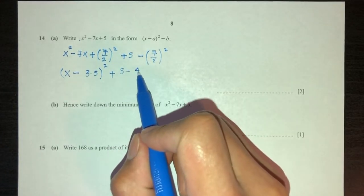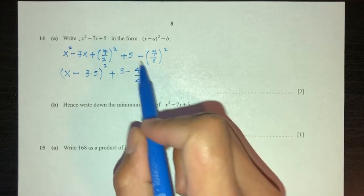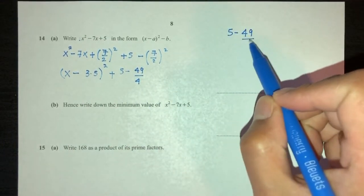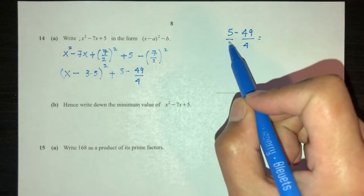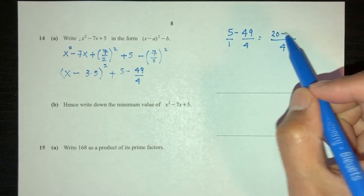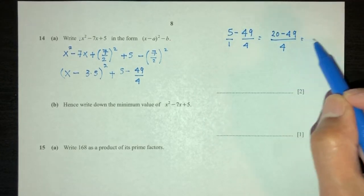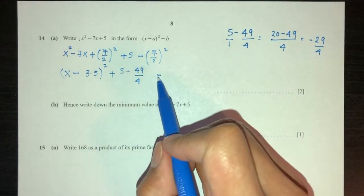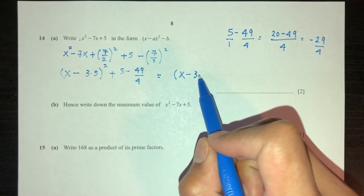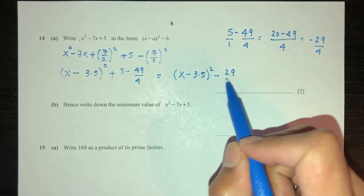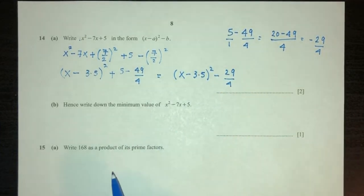Here we have plus 5 minus, that is 49 over 4. So let's simplify this. So 5 minus 49 over 4, this is 1 of course. So first step, everyone become the same base, that will be 20 minus 49, that will be minus 29 over 4. So your answer will be x minus 3.5 square minus 29 over 4. This is how you complete the squares of a quadratic equation.